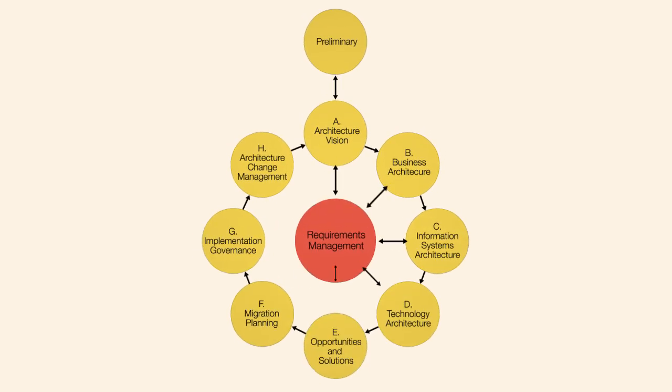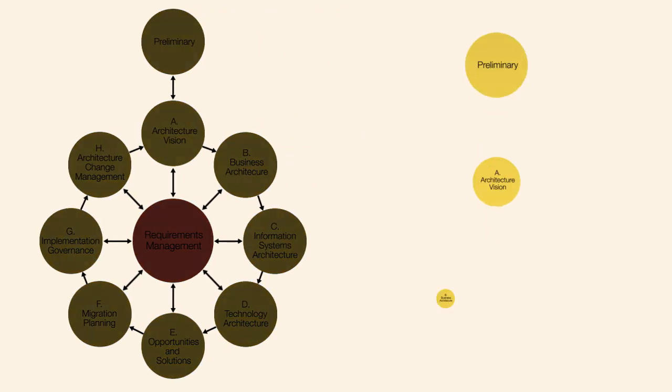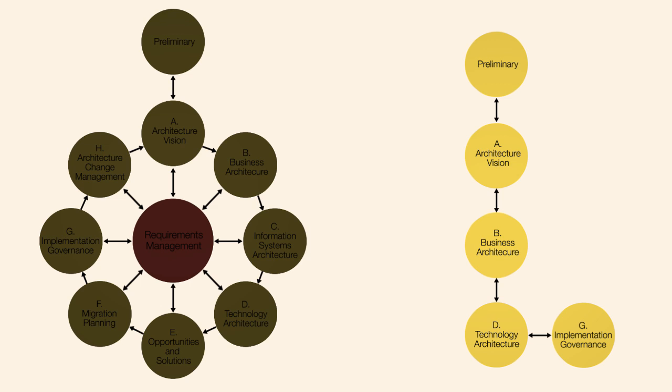The TOGAF ADM sets out a recommended sequence for the various phases and steps involved in developing an architecture. Even when an EA team is following a different methodology, it's likely to follow a similar process to that outlined in the ADM.